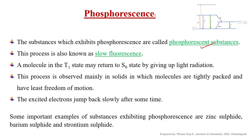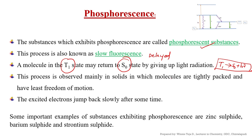Substances which exhibit phosphorescence are called phosphorescent substances. This process is also called slow fluorescence or delayed fluorescence. The molecule present in the T1 state may return to the S0 state by giving up light radiation: T1 to S0 plus hν. This process is observed mainly in solids in which molecules are tightly packed. The excited electrons jump back slowly after some time. Examples of substances which exhibit phosphorescence are zinc sulfide, barium sulfide, and strontium sulfide.